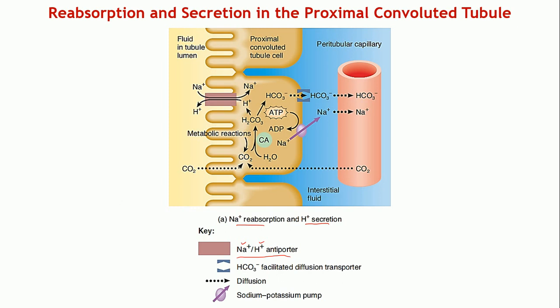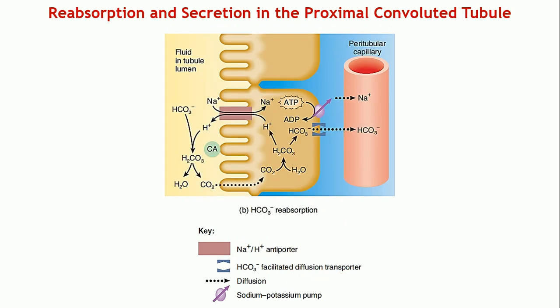The hydrogen for the antiporter comes from carbon dioxide, which enters the cell from blood, the lumen, or metabolic reactions. In the presence of carbonic anhydrase, CO₂ reacts with water to form carbonic acid, which dissociates into H⁺ ions and bicarbonate. The H⁺ is secreted in exchange for one sodium entering the cell, and the bicarbonate formed is absorbed by facilitated diffusion.